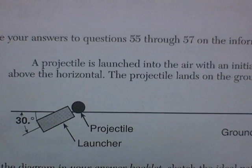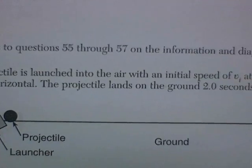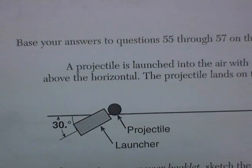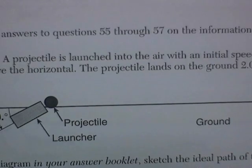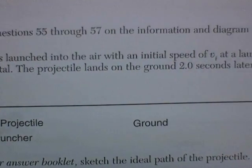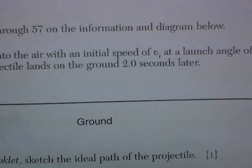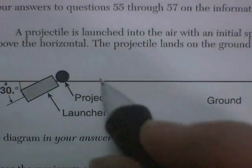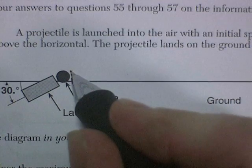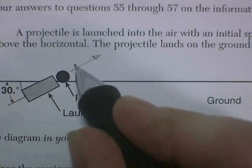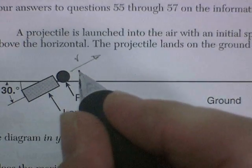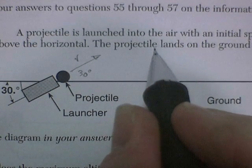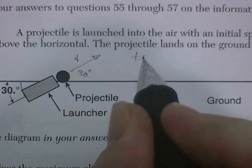A projectile is launched into the air with an initial speed of V at an angle of 30 degrees. The projectile lands on the ground two seconds later. There's a lot of information given here concerning projectiles. We have some initial velocity V at 30 degrees, and it's going to be in the air for a time of two seconds.